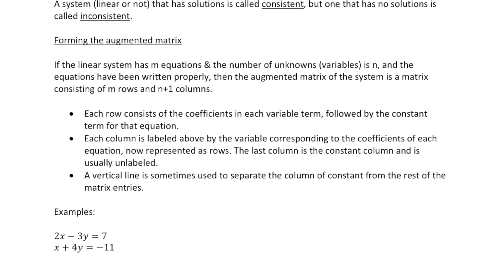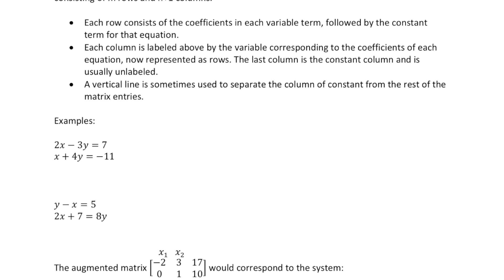The last column is the constant column and is usually unlabeled. A vertical line is sometimes used to separate the column of constants from the rest of the matrix entries.